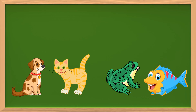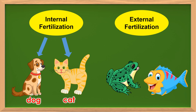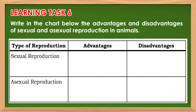Some animals that undergo internal fertilization are dog and cat, while for external fertilization, we have frog and fish. Based on what you have learned in this lesson, indicate the advantages and disadvantages of sexual and asexual reproduction in animals.